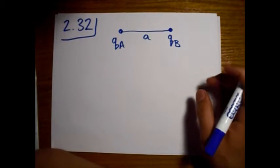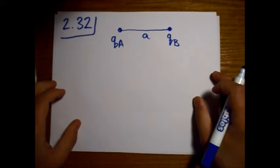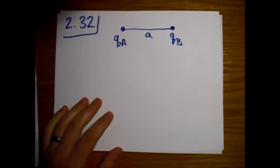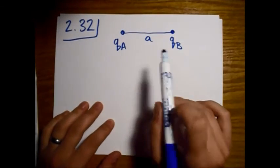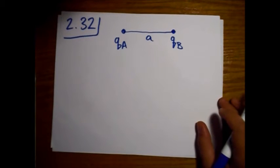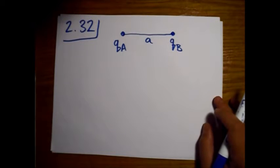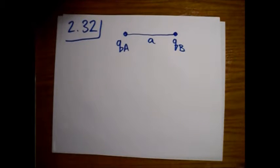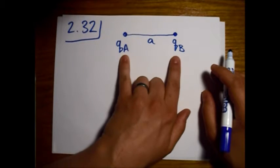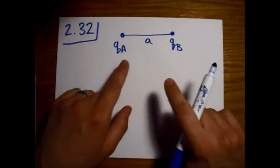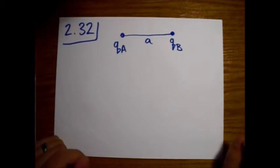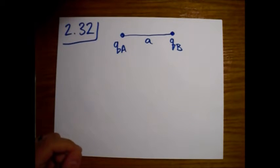Since they're like charges, they're repelling and they're pulling on the string. The problem says we're going to cut this string and let the two charges fly apart, and we want to know how fast they're going when they're very far apart. We're looking at how much energy is stored in this system, then converted into kinetic energy as the charges escape from each other.